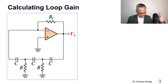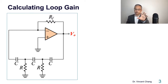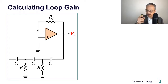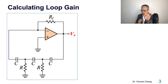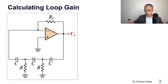Our job in this lecture is problem solving: to solve this circuit and answer two questions. Question one: what's the frequency of oscillation? Question two: to initiate the oscillation, what's the minimum value for the feedback resistance RF? The frequency of oscillation will be decided by the frequency selective network. For question two, what is the minimum value of RF to ensure the oscillation will start?